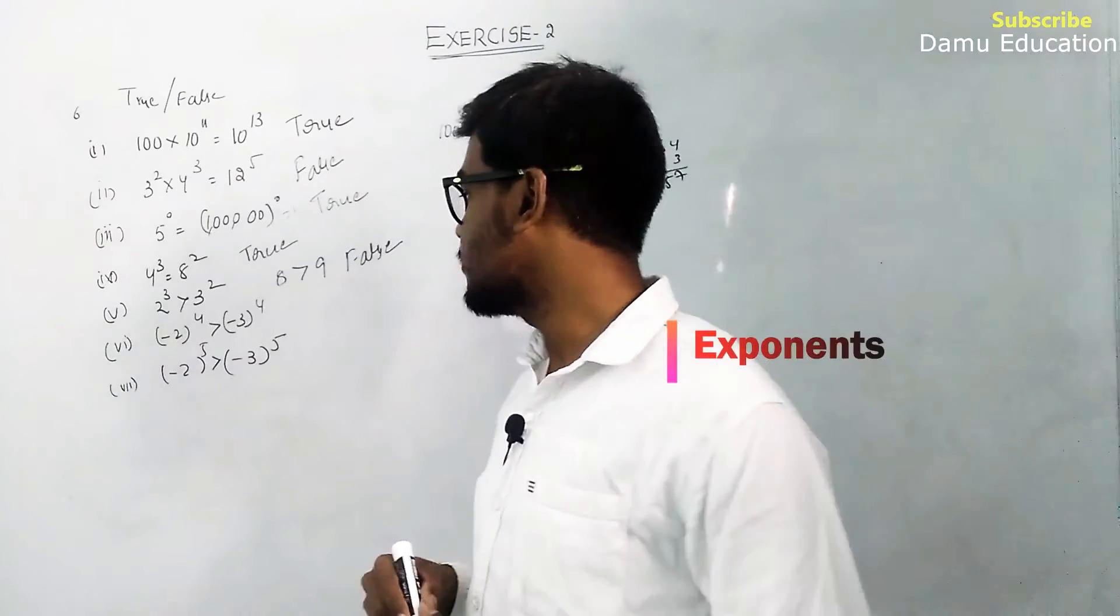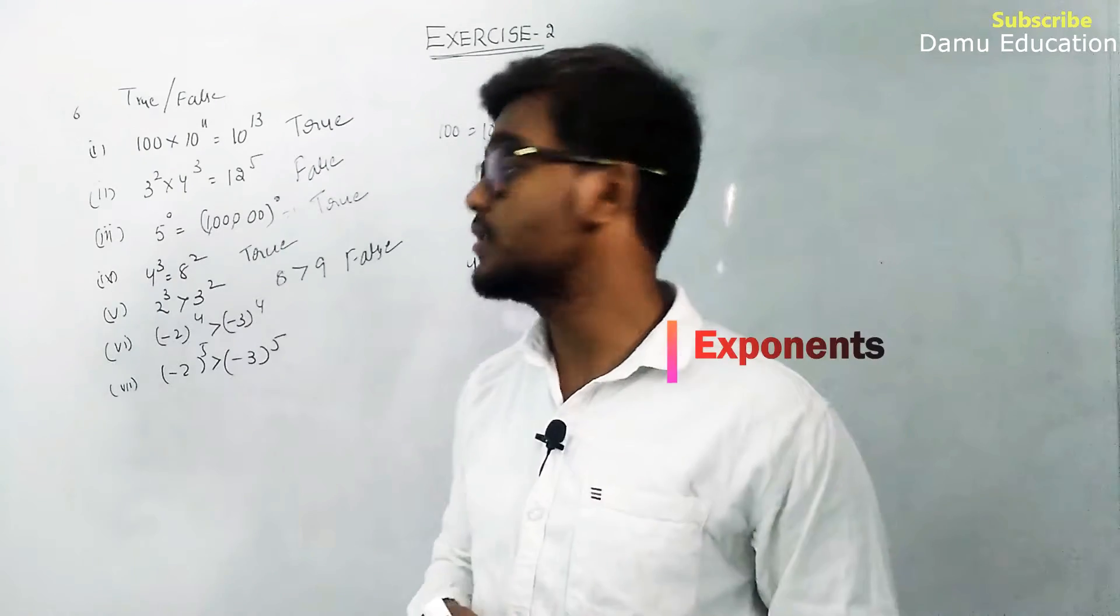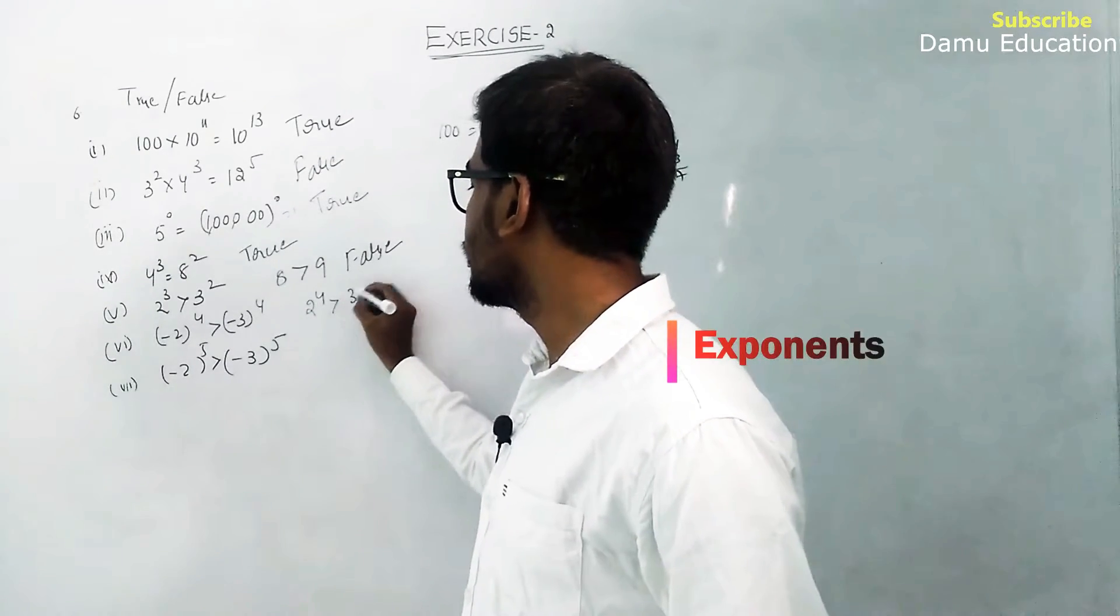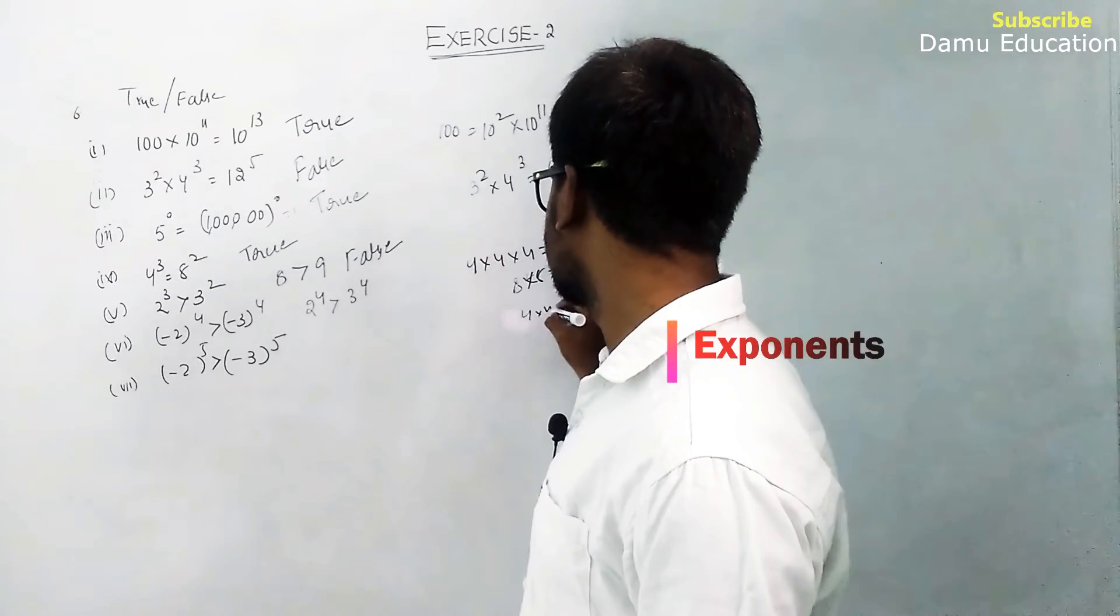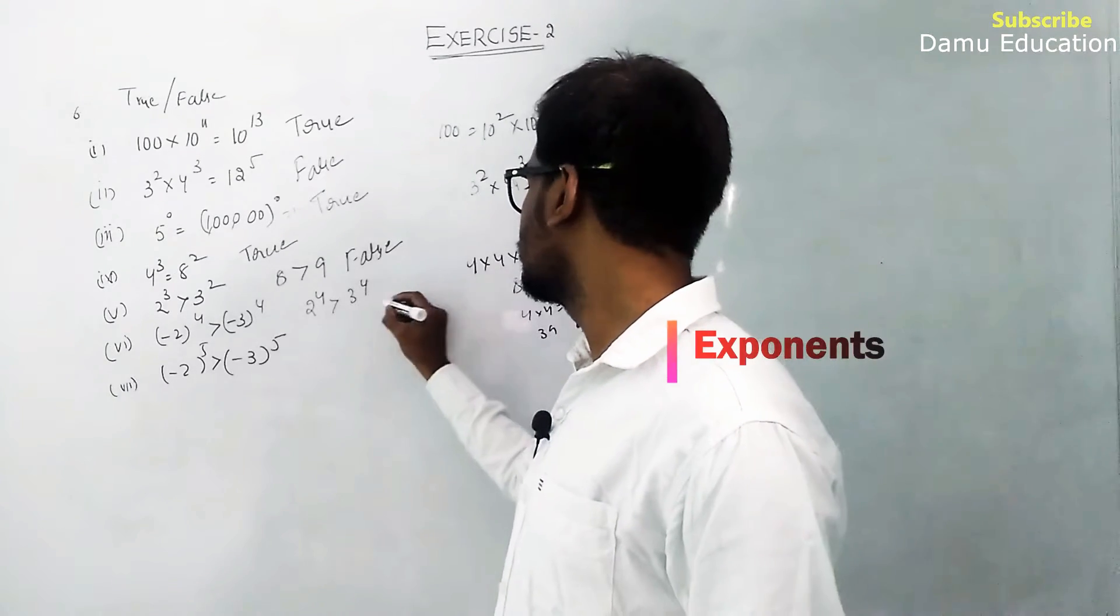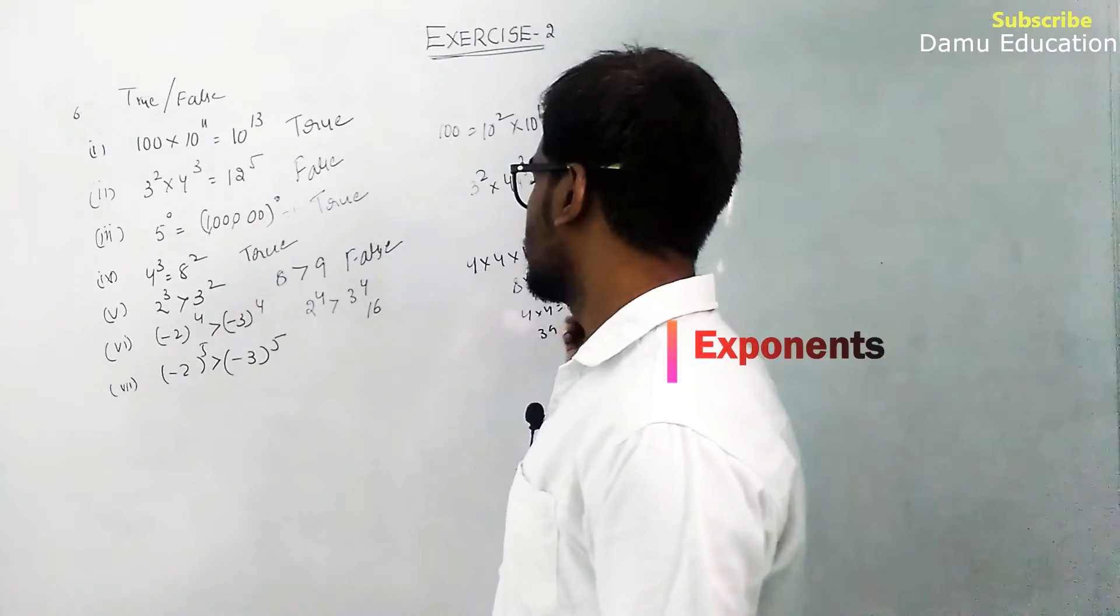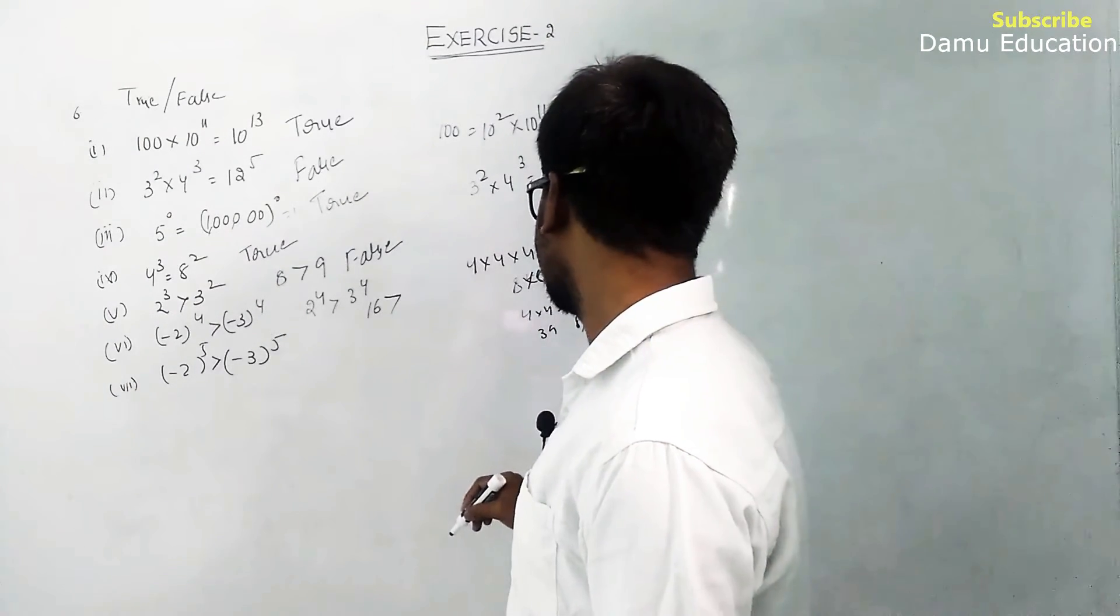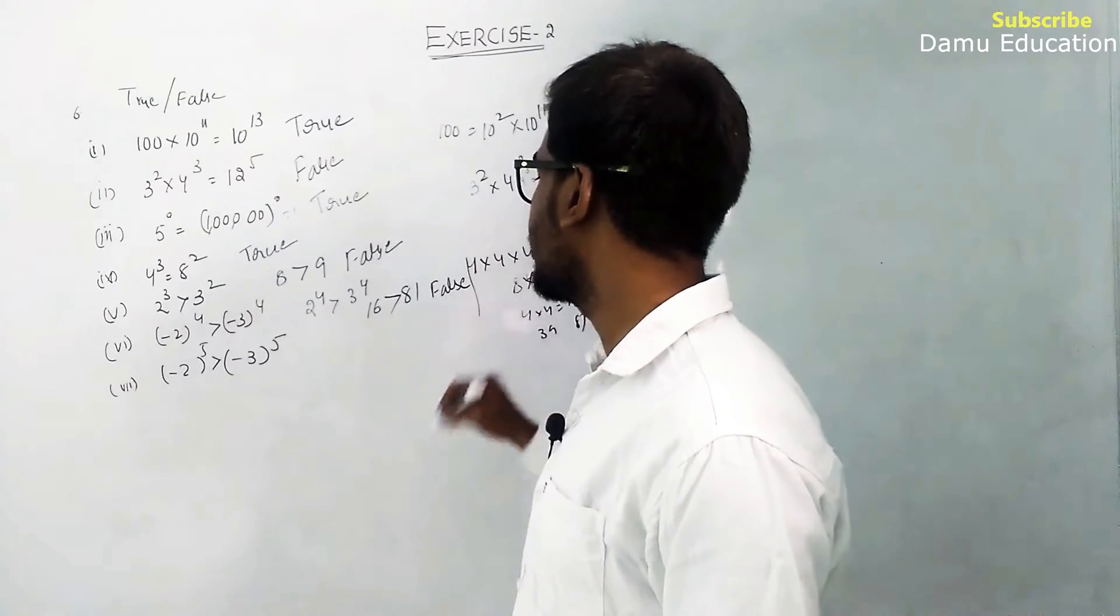Next: (-2)⁴ > (-3)⁴. When we raise negative numbers to even powers, they become positive. So 2⁴ = 16 and 3⁴ = 81. 16 is not greater than 81, so this is also false.